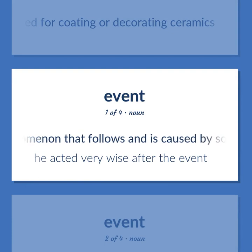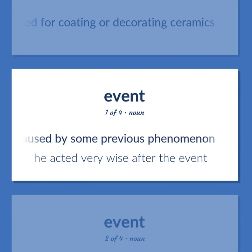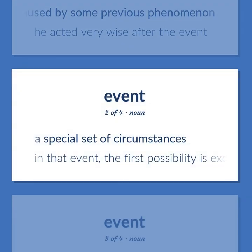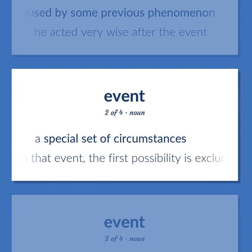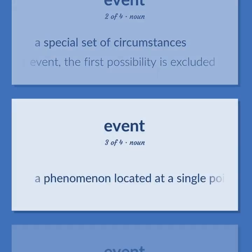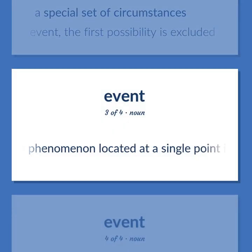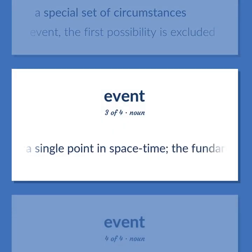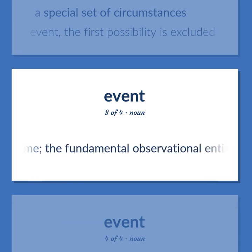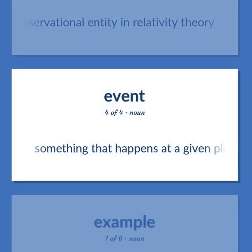EVENT: A phenomenon that follows and is caused by some previous phenomenon — he acted very wisely after the event. A special set of circumstances — in that event, the first possibility is excluded. A phenomenon located at a single point in spacetime; the fundamental observational entity in relativity theory. Something that happens at a given place and time.